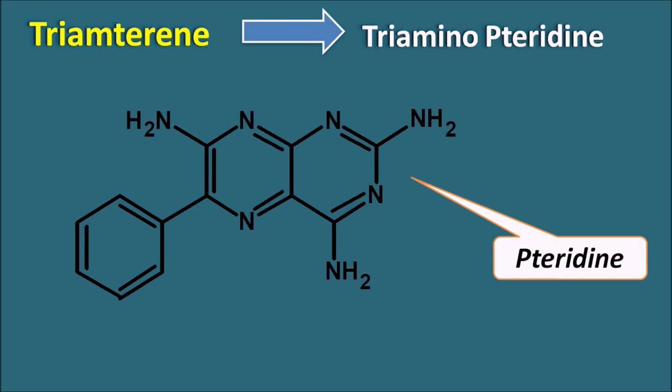Now let us give the numbering to this pteridine ring system: 1, 2, 3, 4, 5, 6, 7, and 8. We have to start the numbering from the heteroatom and should not give the numbering to the bridged atoms. It has three amino groups at the second, fourth, and seventh positions, and a phenyl group at the sixth position.